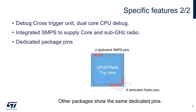We have two cores to allow the debug process in an efficient way. There is a debug cross-trigger unit, which is the peripheral that allows synchronizing breakpoints between both cores. For example, we can stop the application on both cores at the same time.